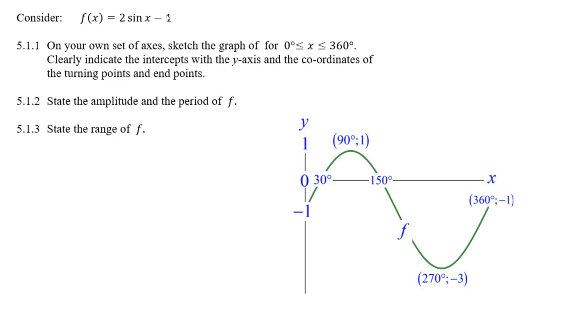I know the period of this is 360 degrees. So what's going to happen? It's going to go minus 1. And then after 90 degrees, it's going to go all the way up 2. It's got an amplitude of 2 from minus 1 all the way to 1. At 90 degrees, it's going to be 1.